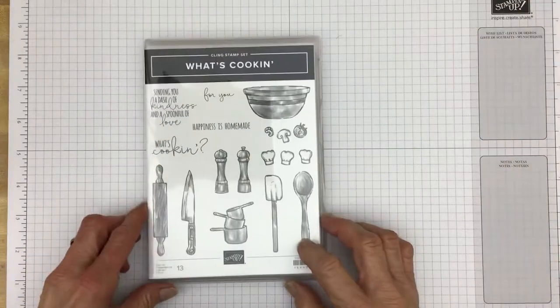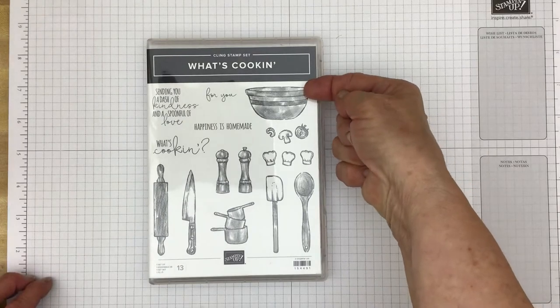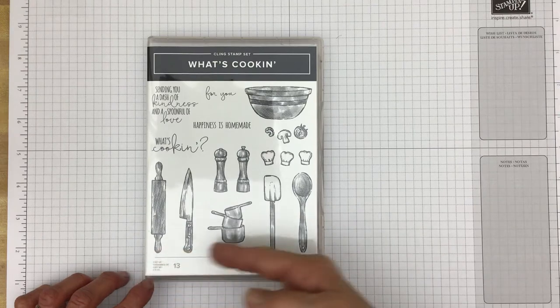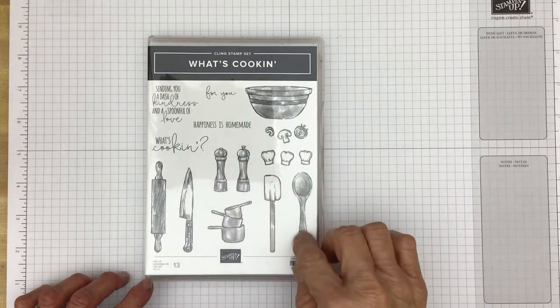Here's the stamp set. It has a nice mixing bowl, a wooden spoon, a spatula, knife, a rolling pin, measuring cups, salt and pepper shakers. Those all have dies.